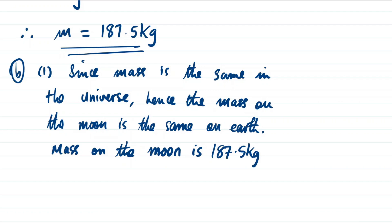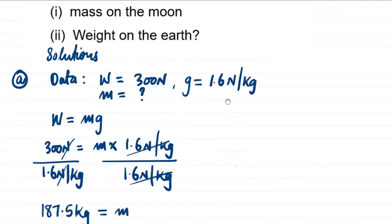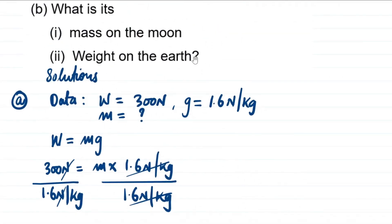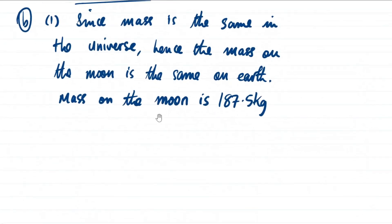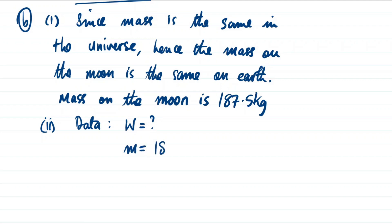Now we come to the second part of the question, Roman numeral (ii): find the weight on earth. We are looking for weight, so we write our data: weight is unknown (?). We know that mass is constant at 187.5 kg.